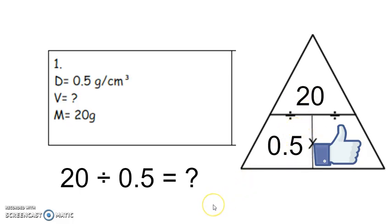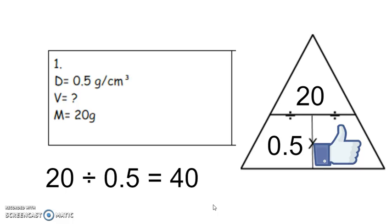So what is 20 divided by 0.5? If you use your calculator, you'll find that 20 divided by 0.5 equals 40. You might think: I just divided — how did it get bigger? When you divide by a decimal, the quotient is going to be larger. Our volume equals 40, so we write V equals 40 cubic centimeters as the answer. That's how you solve problems 1, 2, and 3.